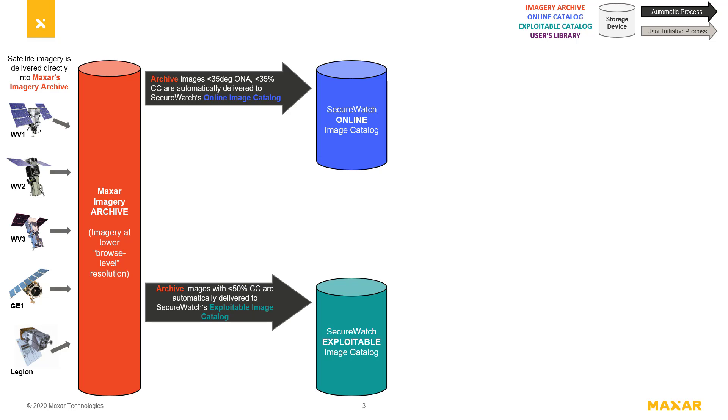Archive images with less than 50% cloud cover are automatically delivered to SecureWatch's exploitable image catalog. Here, you can perform on-the-fly analysis with the help of built-in tools.